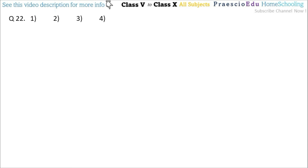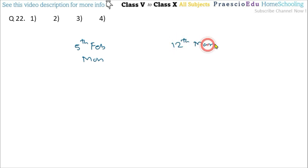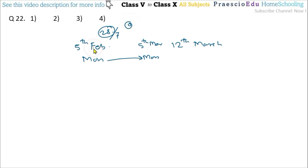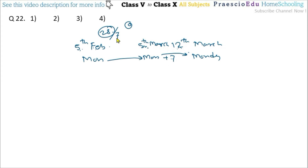Question number 22: In a non-leap year, 5th February falls on Monday. Which weekday falls on 12th March in the same year? Since it is a non-leap year, February has 28 days (28 ÷ 7 = 4, remainder 0). So 5th March is also Monday. Adding 7 days: 5 + 7 = 12, meaning 12th March is also Monday. Answer is Monday, option number 4.